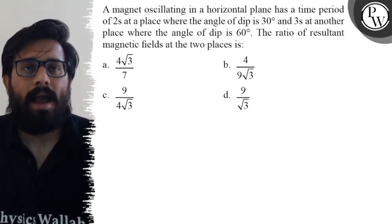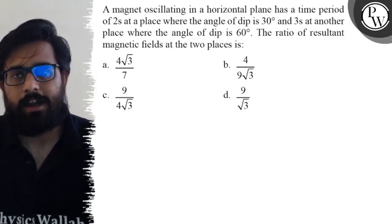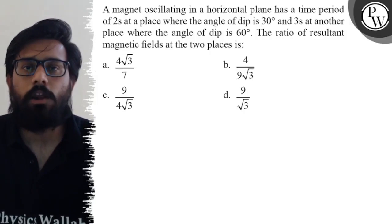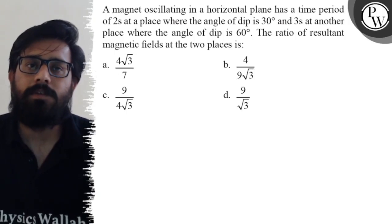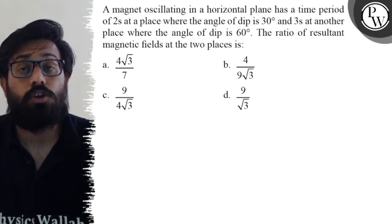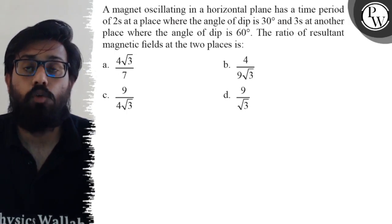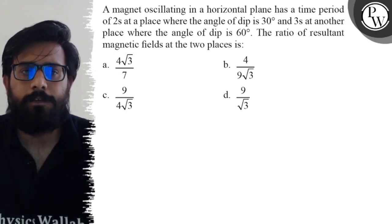A magnet oscillating in a horizontal plane has a time period of 2 seconds at a place where the angle of dip is 30 degrees and 3 seconds at another place where the angle of dip is 60 degrees. The ratio of resultant magnetic field at the two places is: